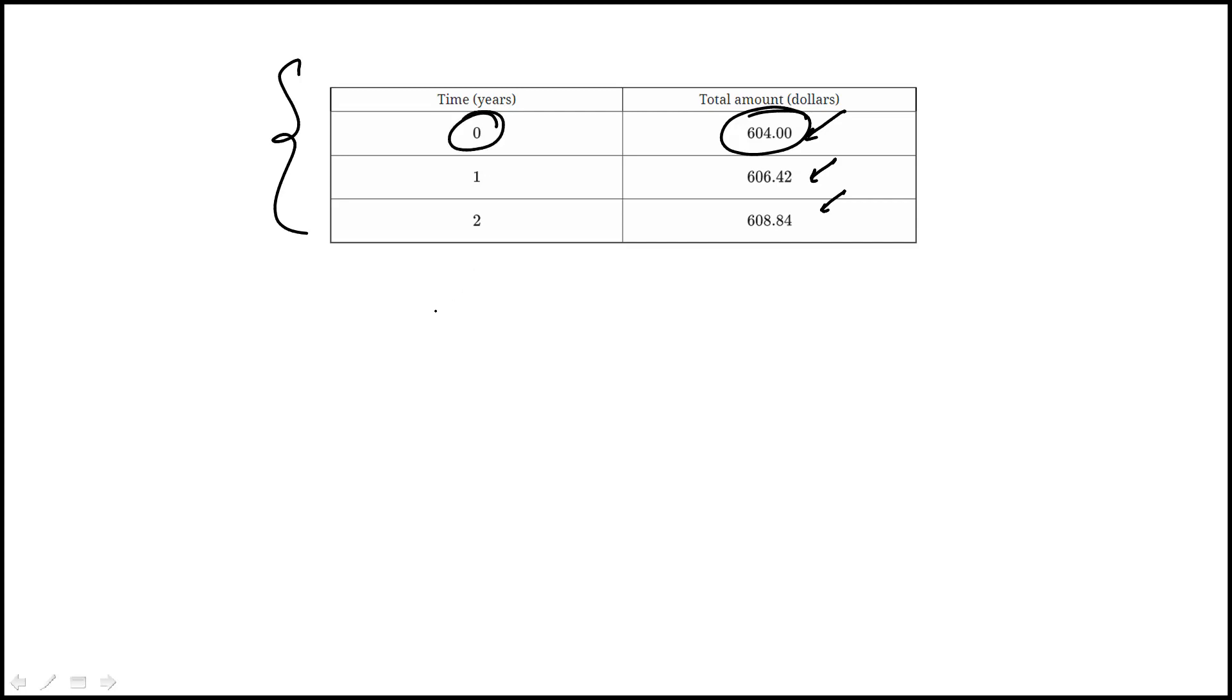So we can actually just start with t equal to zero. That means the initial balance must come out to be 604.